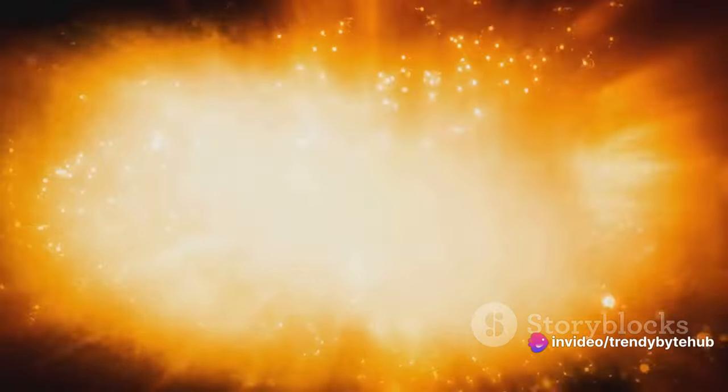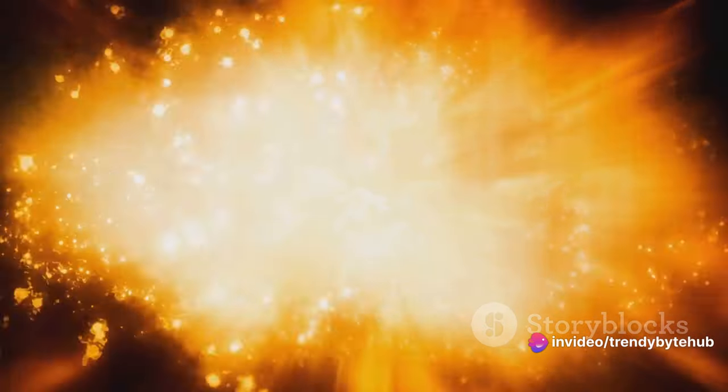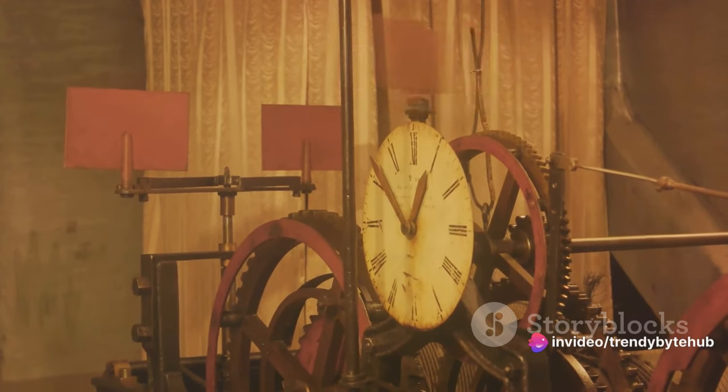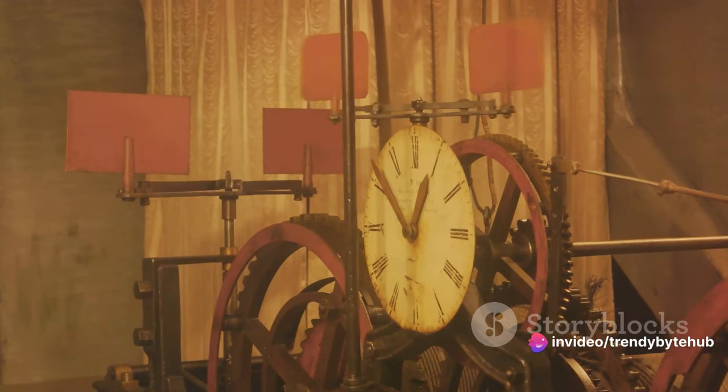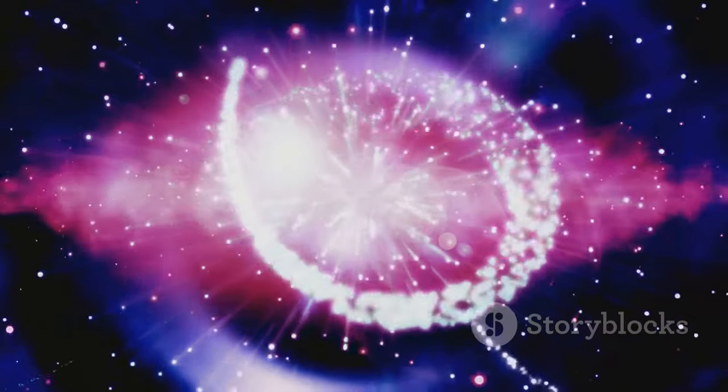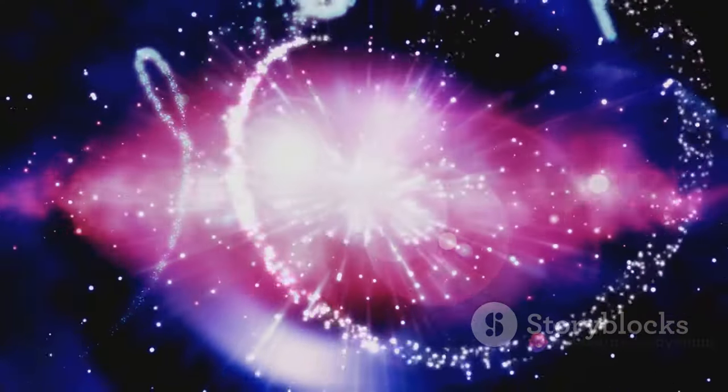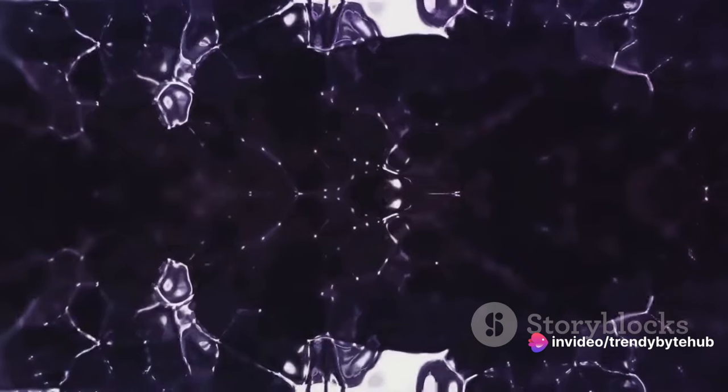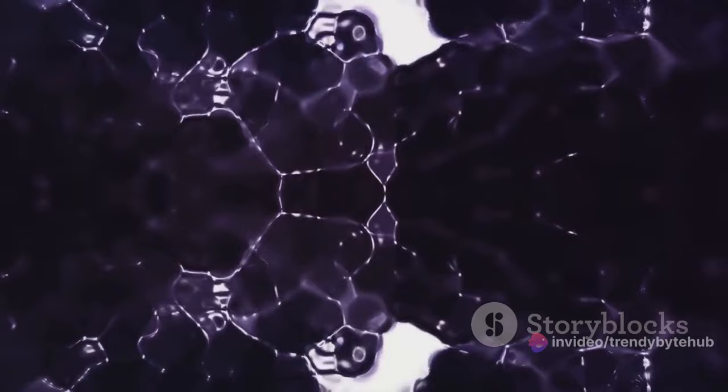Imagine a box of gas particles. If we start with all the particles in one corner, a state of low entropy, they'll naturally spread out over time, moving towards a state of high entropy. This is a one-way process. The particles won't spontaneously return to the corner. This is a simple example of how time's arrow points from past to future. It's a fascinating concept, isn't it? The expansion and cooling of the universe, the increase in entropy, and the Arrow of Time are all interconnected, each playing a part in the cosmic dance that shapes our universe.